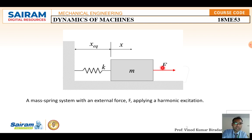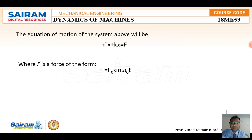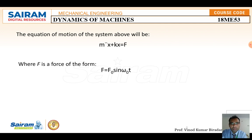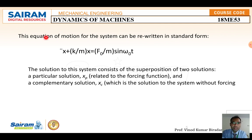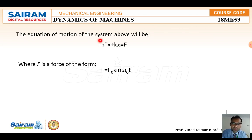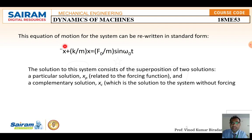According to Newton's second law, we write mẍ + Kx = external force. The external harmonic force applied externally is F = F₀ sin(ωt). Dividing through by M, the equation of motion in standard form becomes: ẍ + (K/M)x = (F₀/M) sin(ωt).